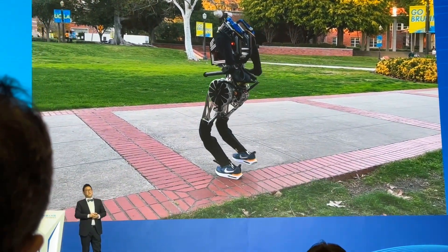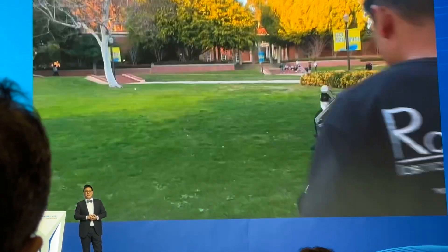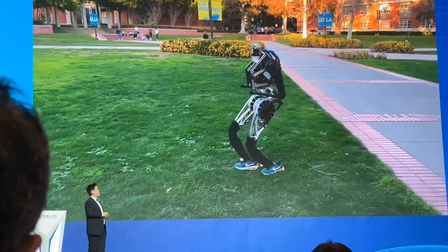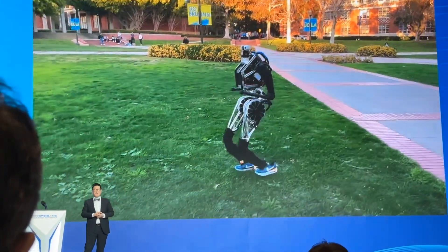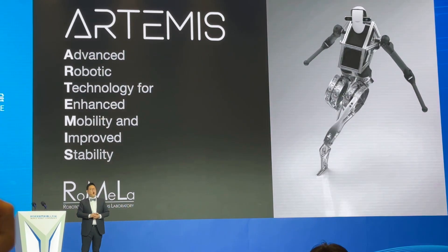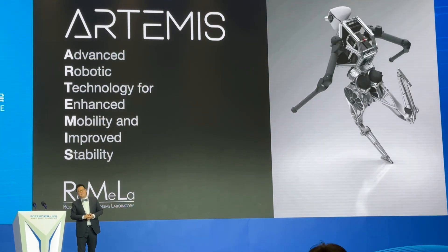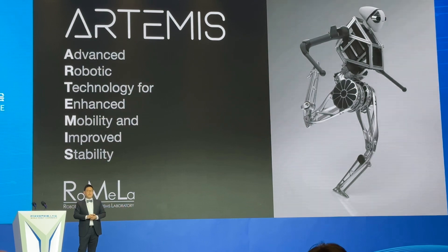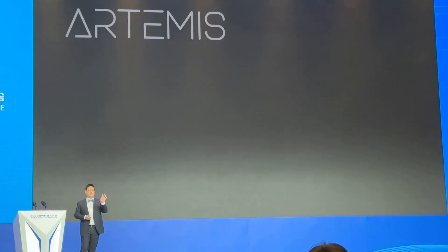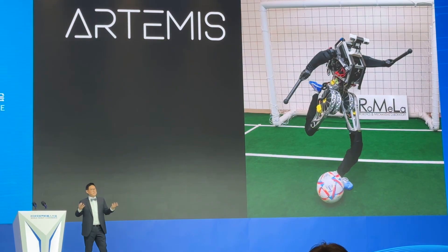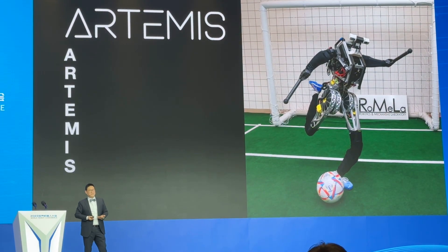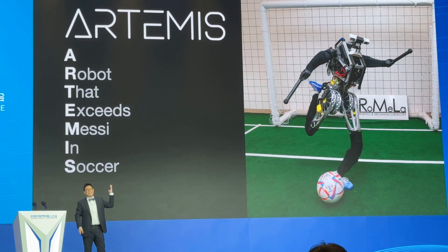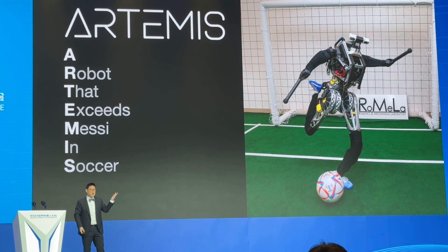These days, we bring Artemis out on campus every two weeks and the students love it — they always interact with the robot. This is Artemis: Advanced Robotic Technology for Enhanced Mobility and Improved Stability. However, in our lab, Artemis stands for something different — it stands for 'a robot that exceeds Messi in soccer,' because we also use this robot to play soccer.